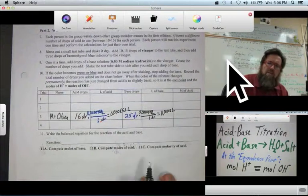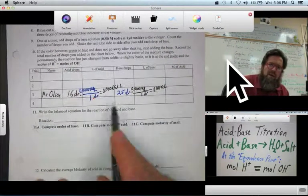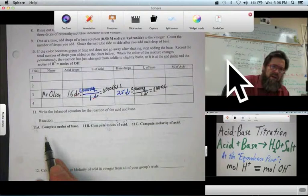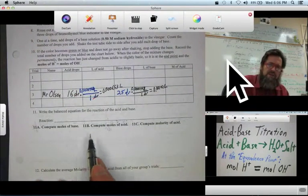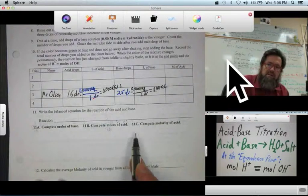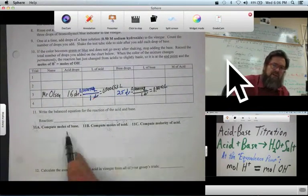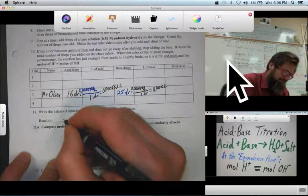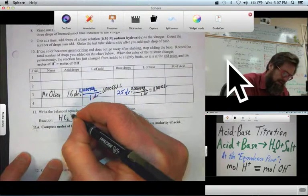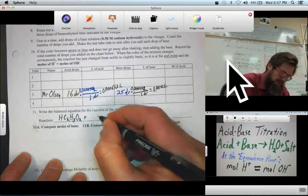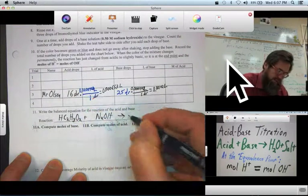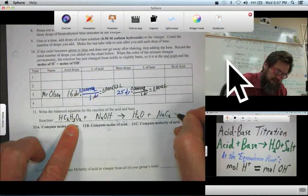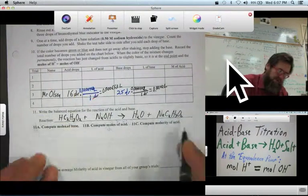Okay. Molarity of the acid. The molarity of the acid takes a little bit of work and question 11 guides us through it. We're going to first write the balanced chemical equation. And then in 11a, compute the moles of base. 11b, compute the moles of acid. 11c, compute the molarity of the acid. We need each of these steps to make our way through. So the reaction is, let's see, acetic acid is the vinegar plus NaOH is the base. Reactive form swap partners. H2O plus sodium acetate, C2H3O2. And that, in fact, is balanced.